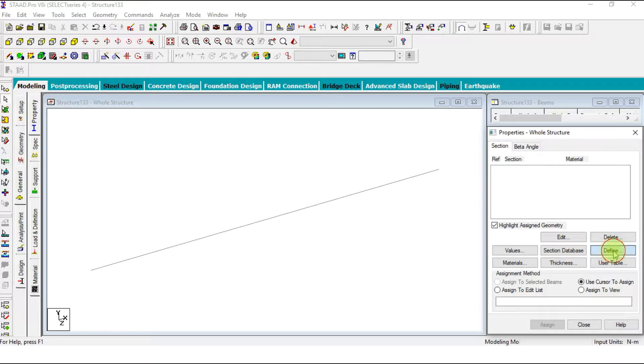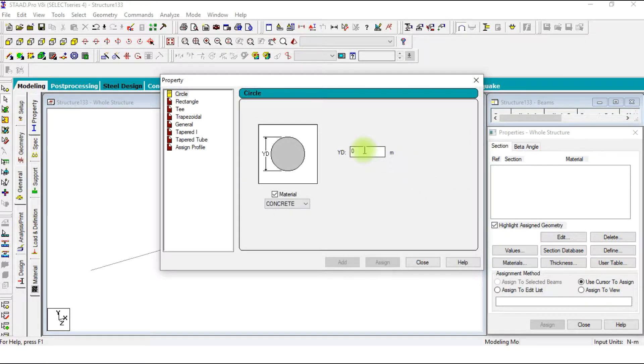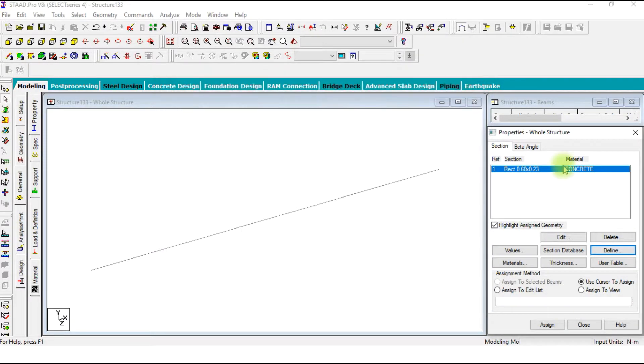Go to general tab, define sections, rectangle sections. We are going to apply 230 by 600 mm sections, so go with 0.6 by 0.23, add it. Material will be concrete.